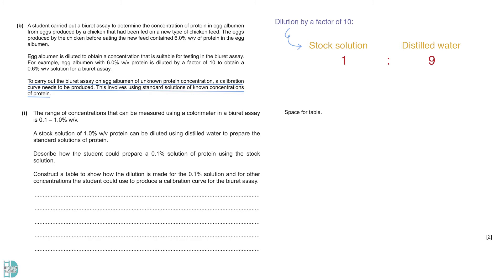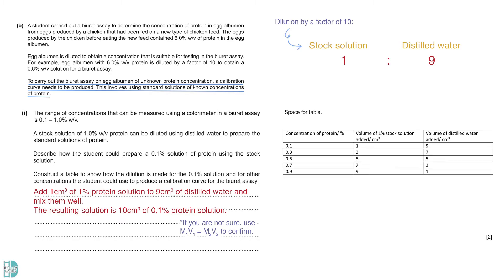With that said, to prepare a 0.1% solution, we can add 1 cm³ of 1% protein solution to 9 cm³ of distilled water and mix them well. The resulting solution is 10 cm³ of 0.1% protein solution. If you are not sure how to use the ratio to do this, you may use the formula M1V1 equals M2V2 to do the calculation. Now, let's make the table. The other concentrations I choose are 0.3, 0.5, 0.7 and 0.9%. You may choose other concentrations but make sure there are at least 5 in total. In this table, you must include the volume of the 1% stock solution and the distilled water added to gain full credit. I am making 10 cm³ each. It is fine if you choose another volume.